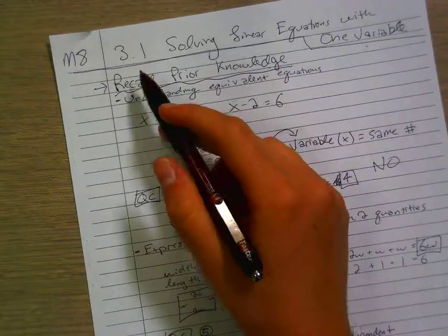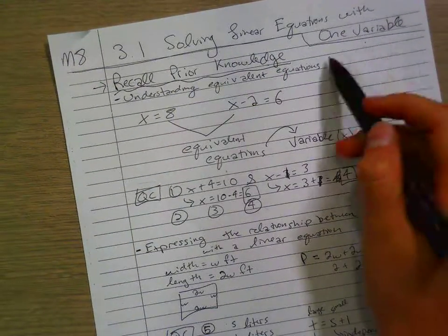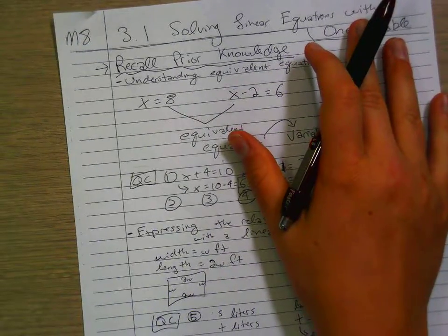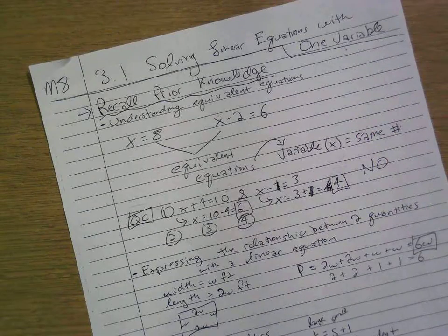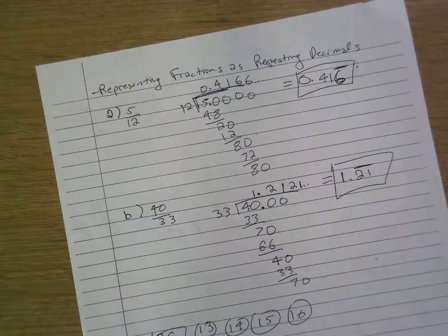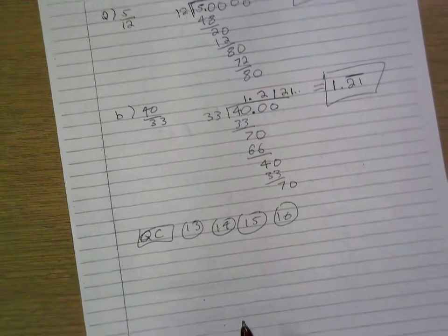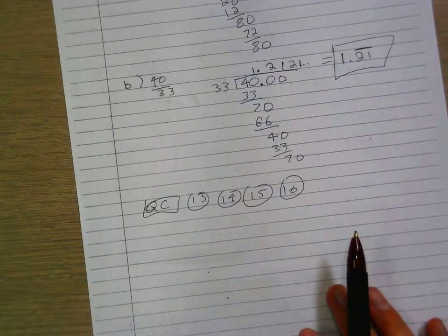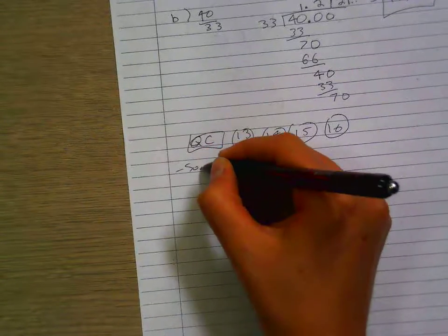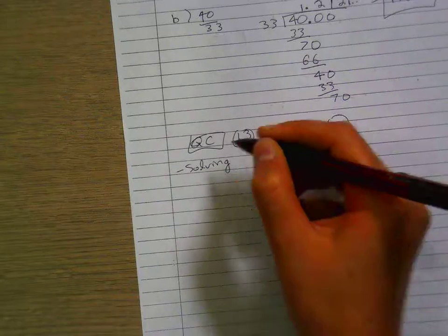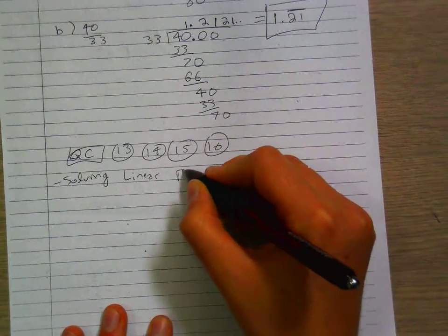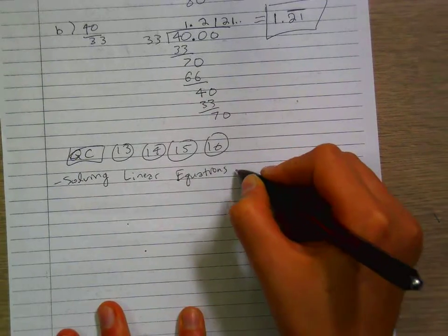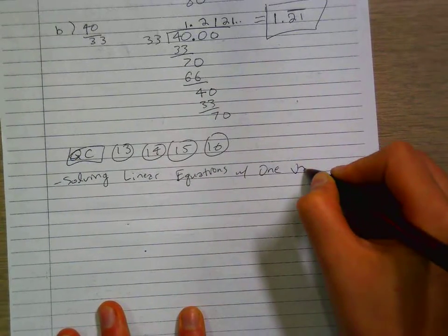This is Math 8, Section 3.1, Solving Linear Equations with One Variable. Last time in class we discussed recalling prior knowledge, things about algebraic equations and how to represent fractions as decimals, as repeating decimals. Now we're going to start this section with solving linear equations with one variable.